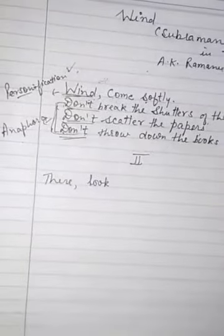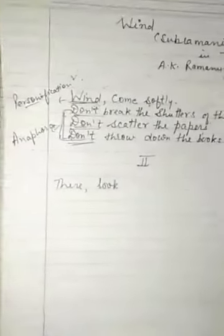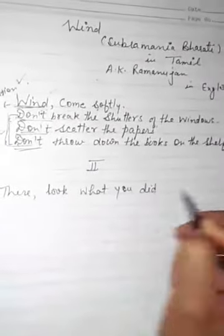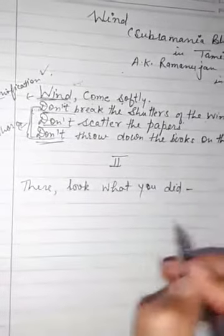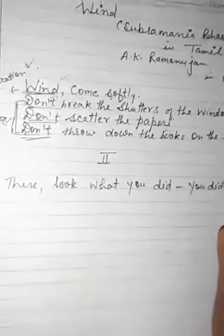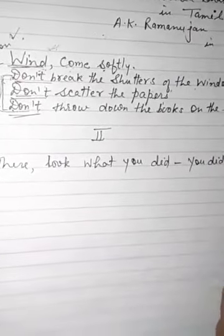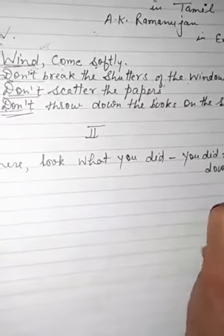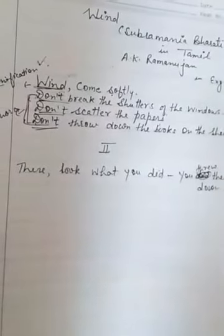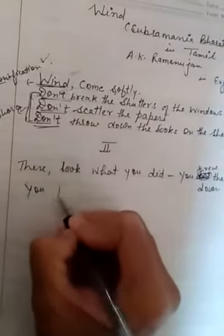Next stanza: There, look what you did. So again in the second stanza, the poet is talking to the wind. Again you can say that wind is personified. He is in complaining mood. He says, see what you did. What did you do? You threw them all down. You tore the pages of the book.